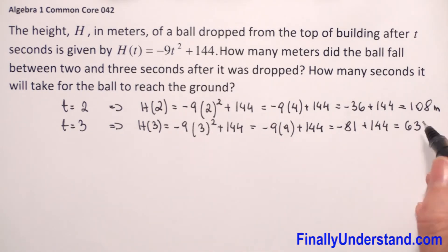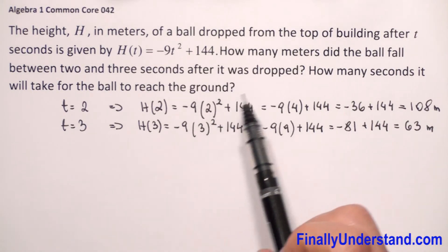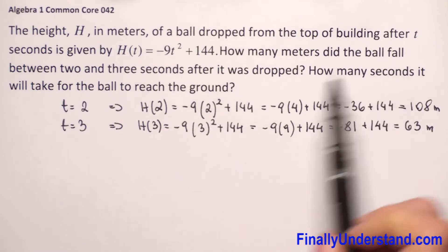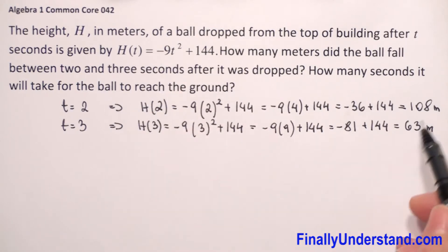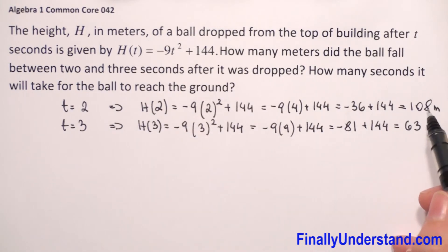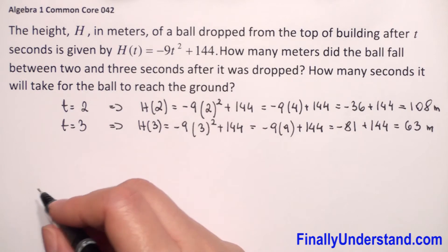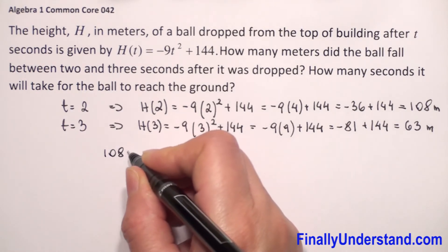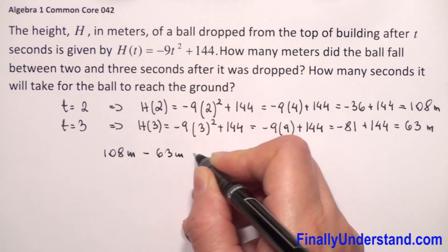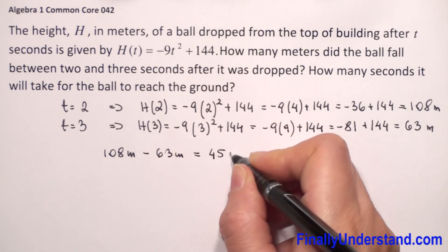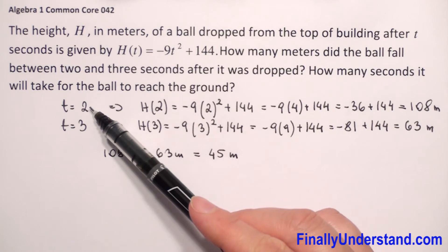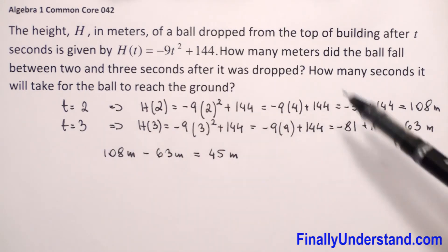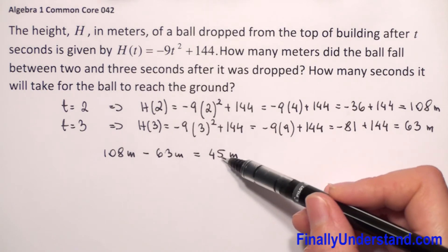So h(3) equals 63. We calculated that at the second second the height of the ball is 108 meters, and at the third second it is 63 meters. To find how many meters the ball fell between 2 and 3 seconds, we find the difference: 108 minus 63 equals 45 meters. The ball dropped 45 meters.